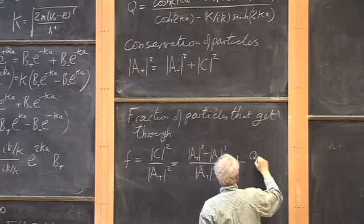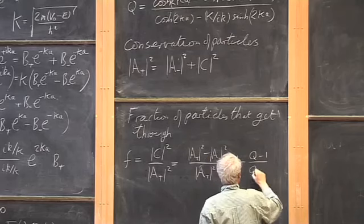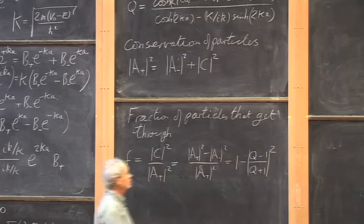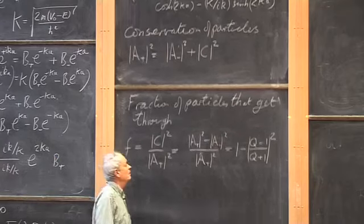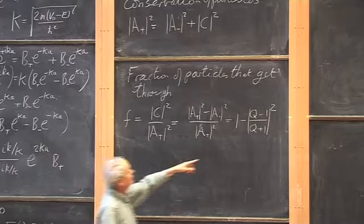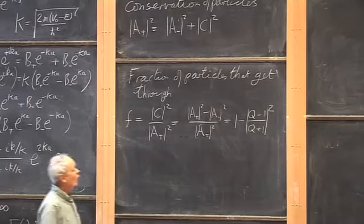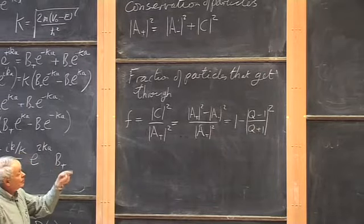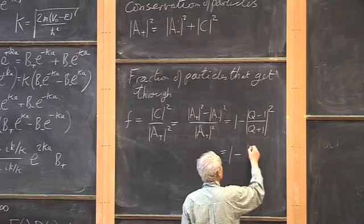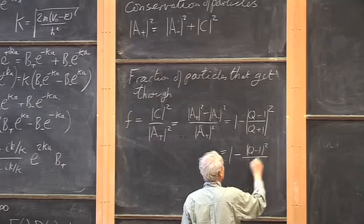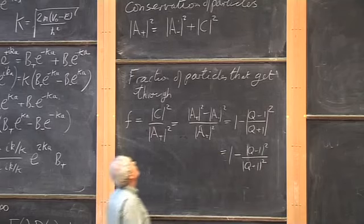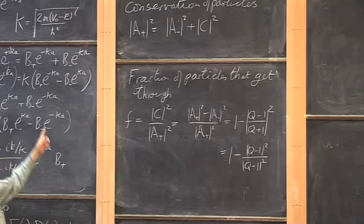The fraction that gets through is f = 1 minus |q−1|²/|q+1|², which equals 1 minus |q−1|² over |q+1|². So let's compute these mod squares.